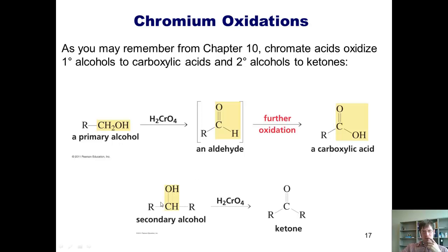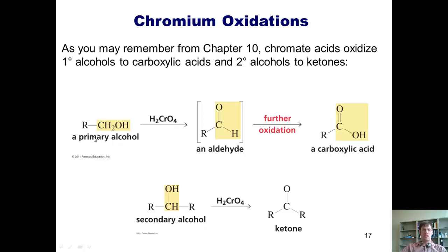If you take a secondary alcohol and treat it under the same conditions, it goes to the ketone. The reason is that a secondary alcohol has only a single hydrogen bound to that carbon that can be removed and replaced with an extra bond to oxygen. A primary alcohol, in contrast, has two hydrogens that can be removed and replaced with a net gain of bonds to oxygen. Thus, a primary alcohol oxidized under these conditions gives a carboxylic acid, and a secondary alcohol gives a ketone.